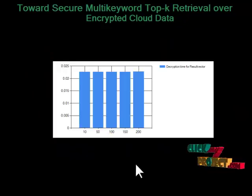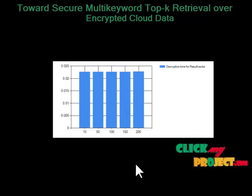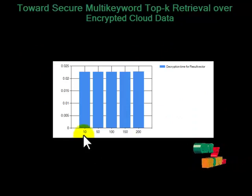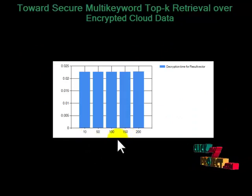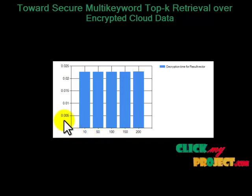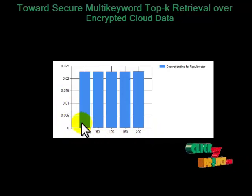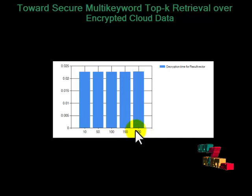The graph shows the decryption time for the result vector. The x-axis shows the number of query keywords and the y-axis shows the time to decrypt. The decryption time for all numbers of queries is relatively the same.